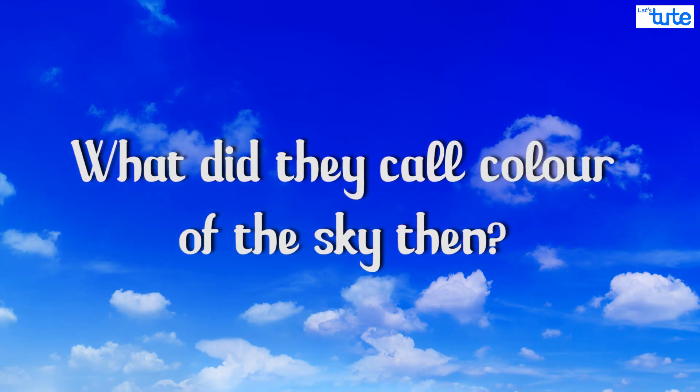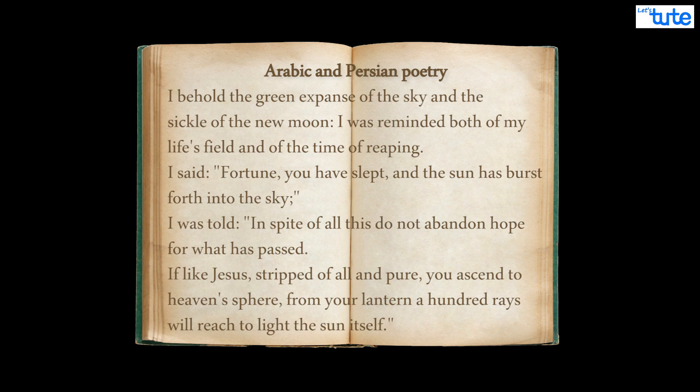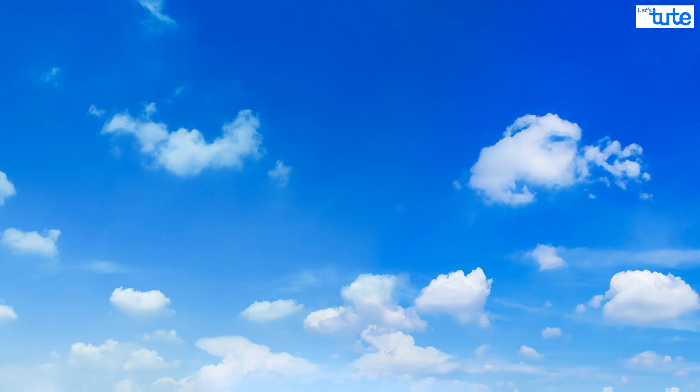So what did they call the color of the sky then? Well, classical Arabic and Persian poetry usually called the sky green while Greeks called it grey or white. But now we all know of course that the sky is blue.